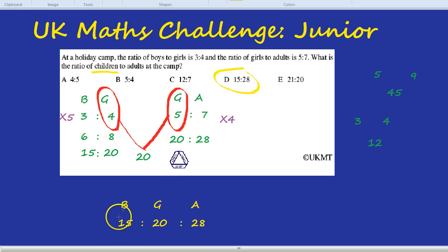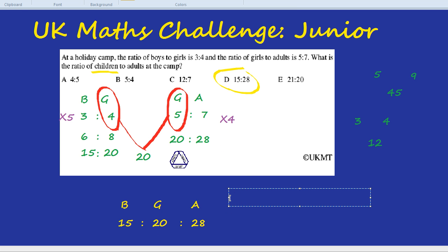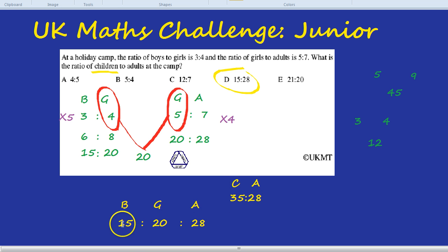The children are 15 and 20. 15 plus 20 is 35. So for every 35 children in total, you get 28 adults. So for every 35 children, you get 28 adults. You see all the children here was 15 and 20 and the adults were 28.